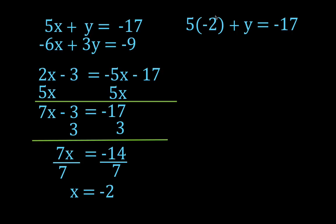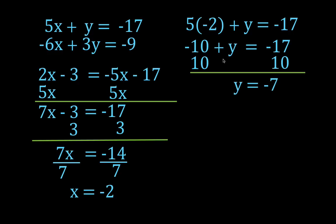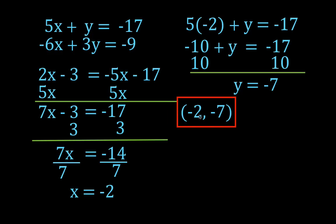5x — x is minus 2 — so I substitute minus 2 in. 5 times minus 2 is minus 10, plus y equals minus 17. I want to solve for y, so I add 10 to both sides, and I get y equals minus 7. Now I have my x term and my y term: the point is x equals minus 2, y equals minus 7, which is hopefully a solution to both equations and therefore the point where these two lines intersect.